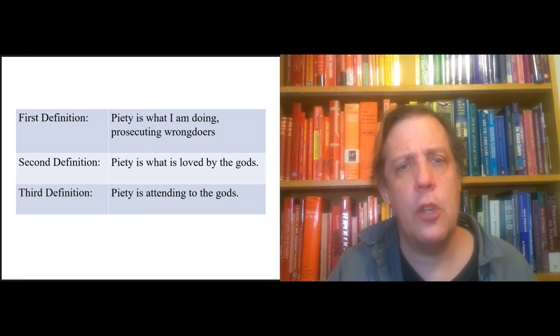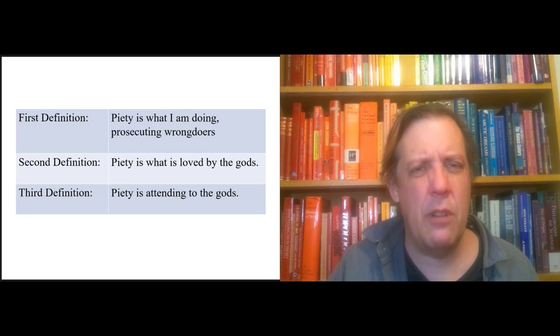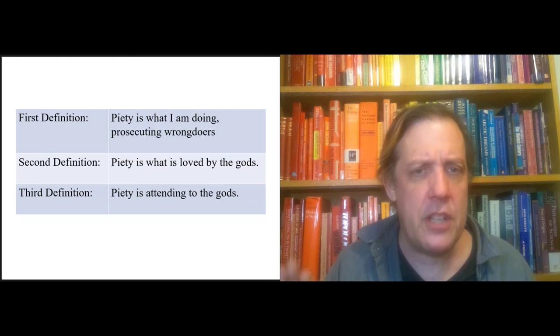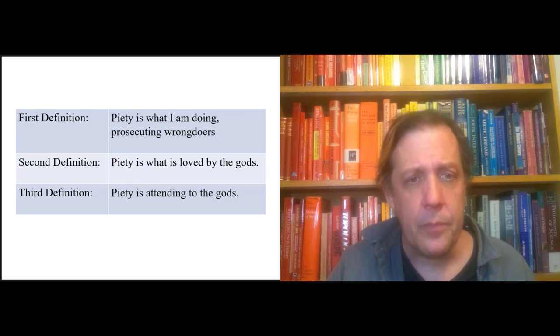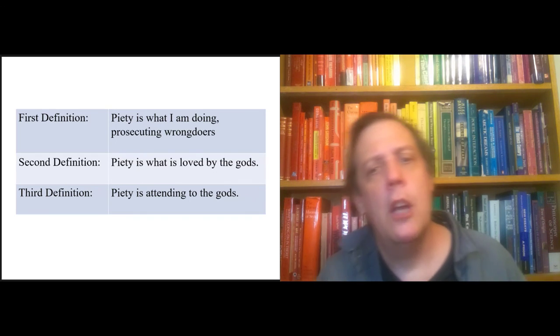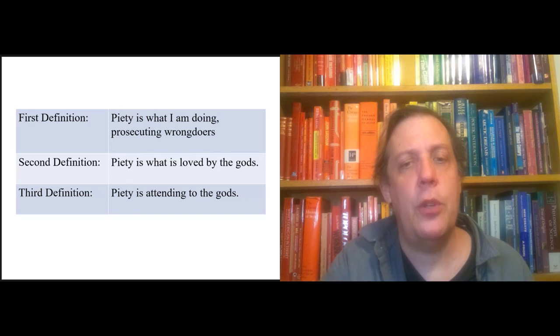That kind of wraps up this middle section. The first section was the introduction and the first definition that Euthyphro offers. Piety is what I'm doing, prosecuting wrongdoers. The first definition isn't even the right kind of answer because it's just an example. The second definition is the right kind of answer. Piety is what is loved by the gods. But this gets sidetracked by the Euthyphro question. In the section you're going to read next, they play around with a number of different definitions. I'm just going to label this as the third definition: piety is attending to the gods, serving the gods.